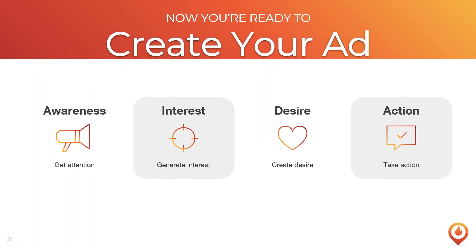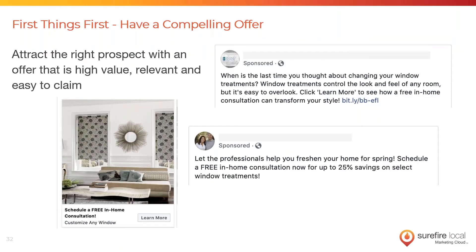When you get ready to create your ad copy and images, think of this formula: Awareness, Interest, Desire, Action. Your ad copy should flow in this direction. Before you create the ad, you need to think: what is your offer? You need a compelling offer for these Facebook and Instagram ads — one that's relevant to the Facebook user seeing it, and tied to the content of the awareness ad you were running. The offer has to have high value and be easy to claim.